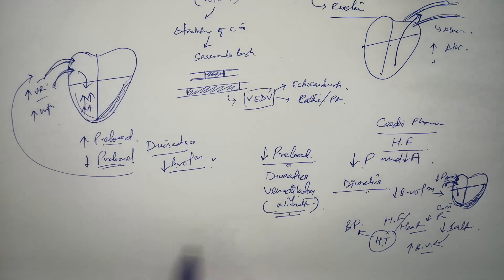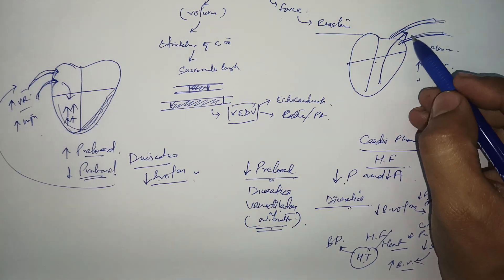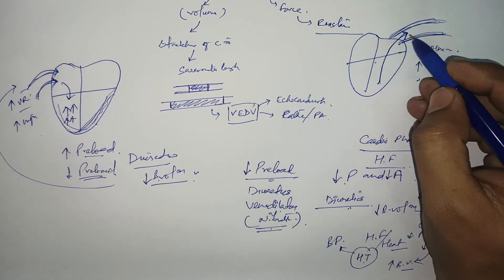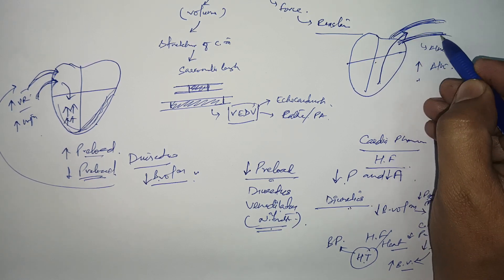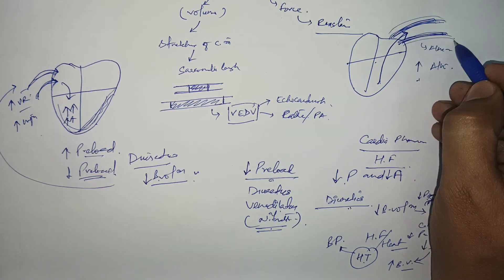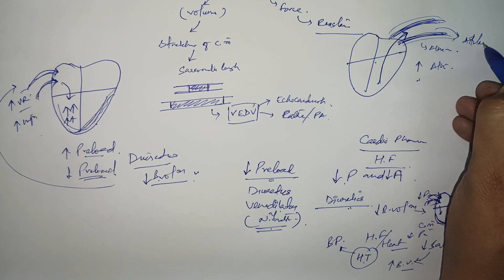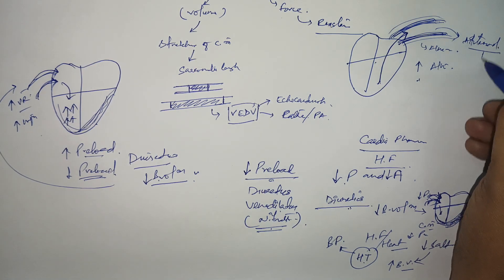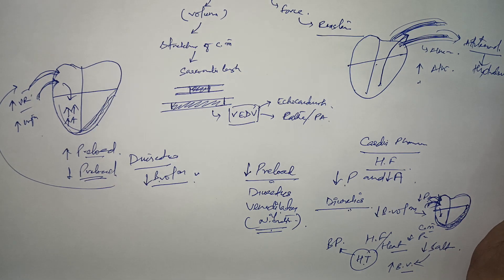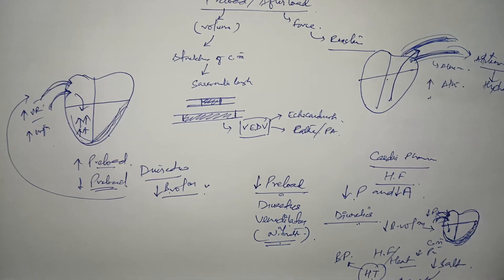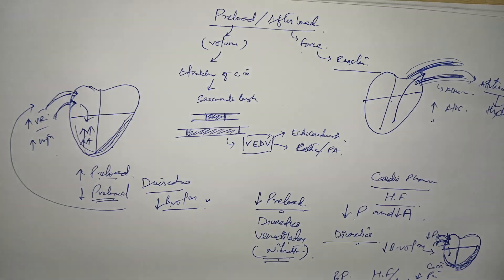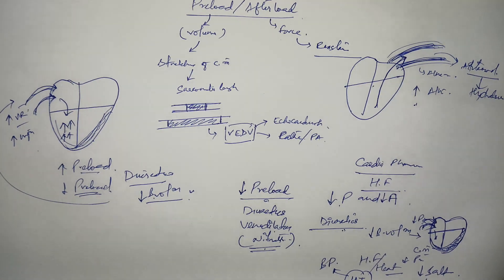For afterload reduction, we need to decrease the resistance or dilate the arteries. That can be achieved with the help of arteriodilators — an example is hydralazine. This is all about preload, afterload, and their significance in heart failure.